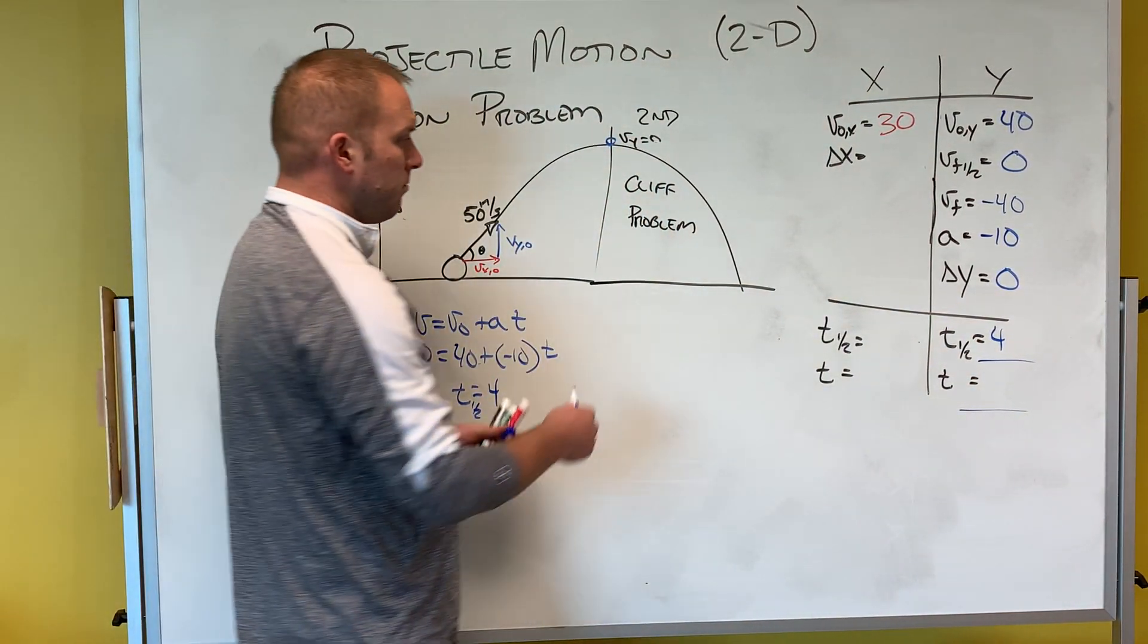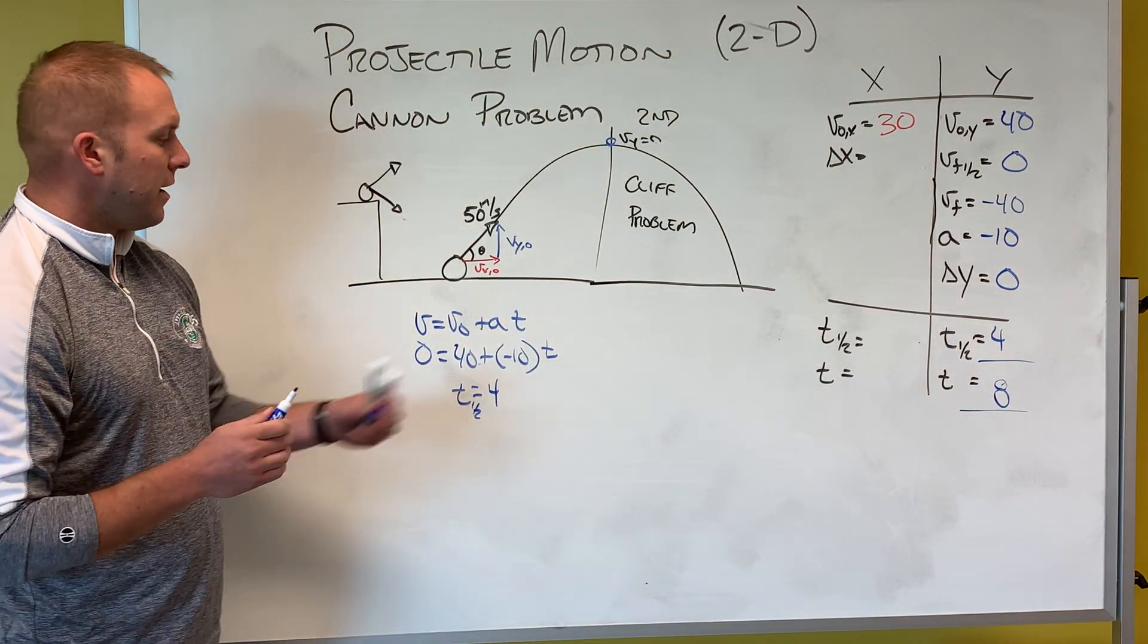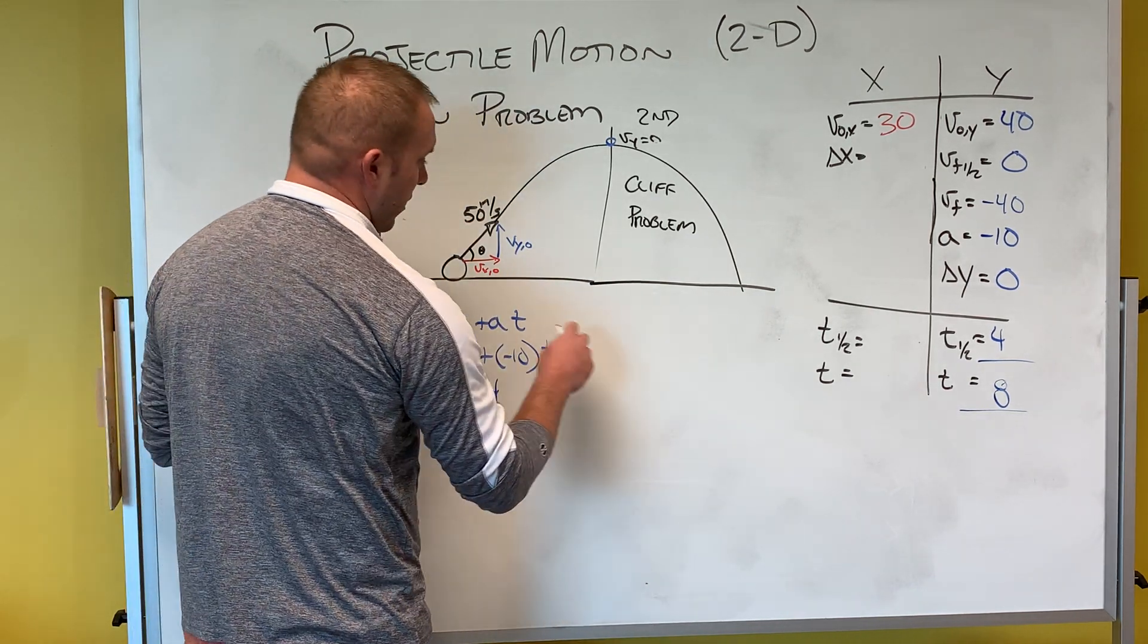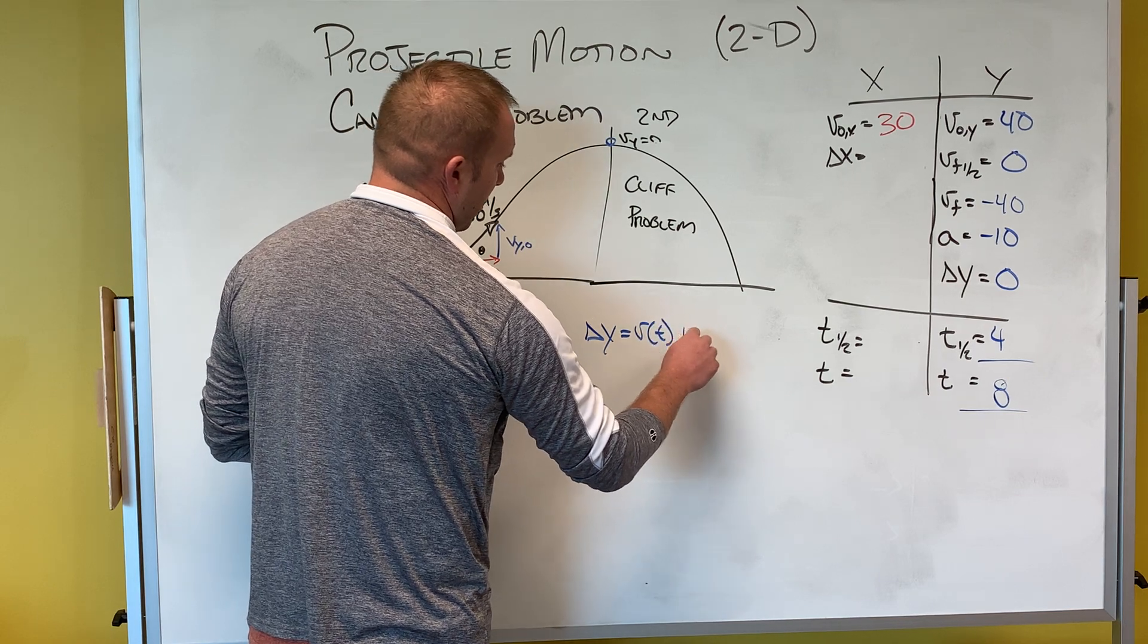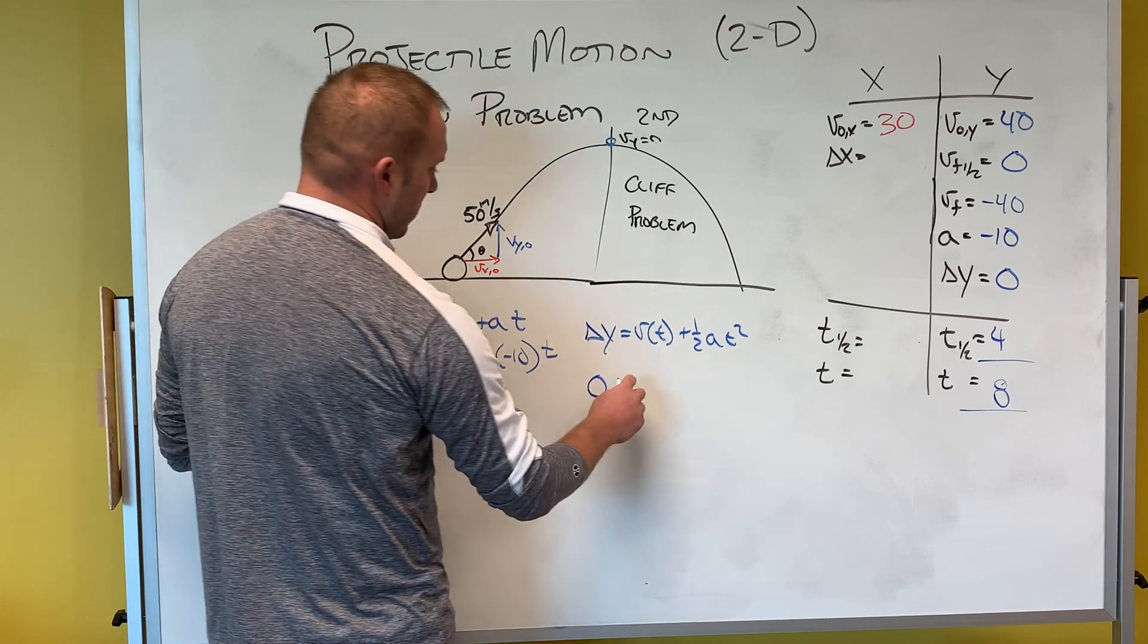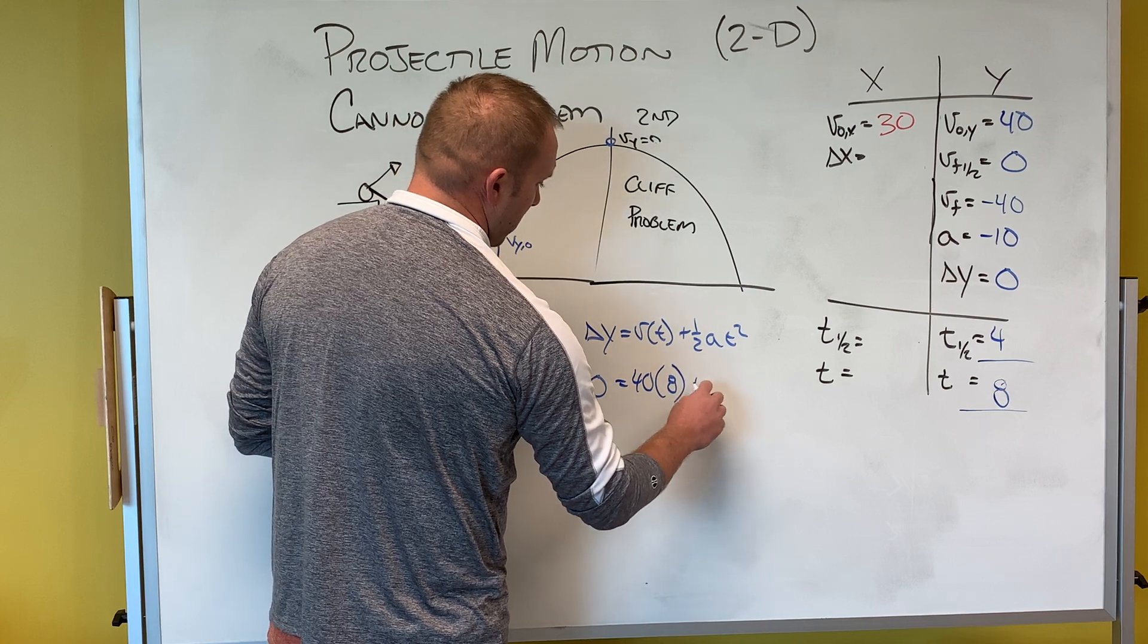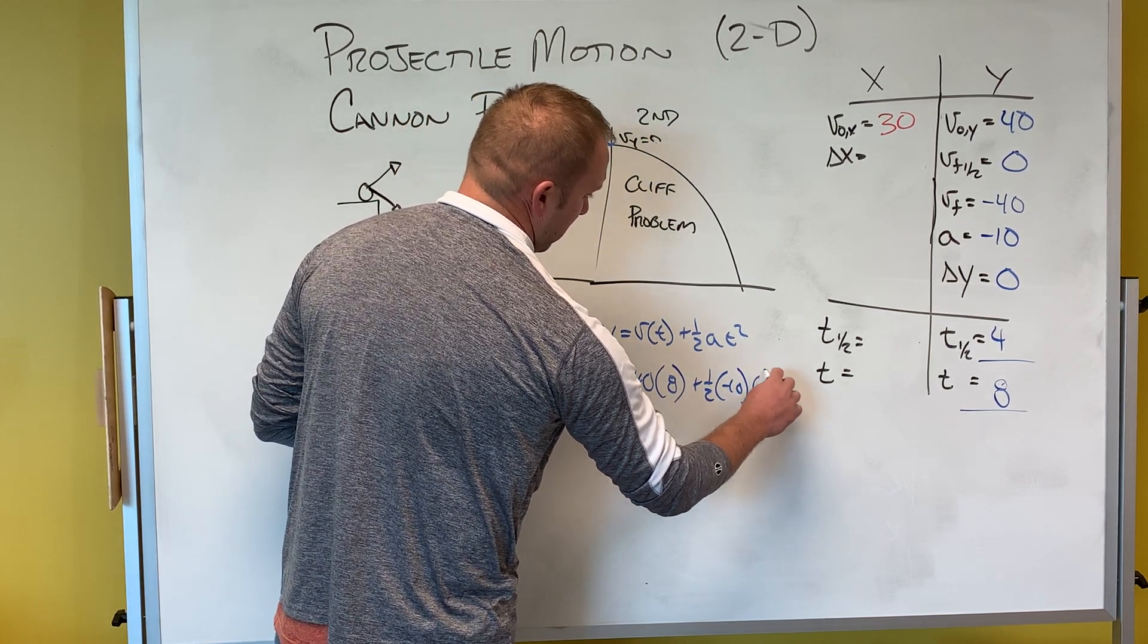What I know then, that my total time would then be eight seconds. And I can prove that using our equation of change in y equals velocity times time plus one half at squared. So my change in y should be zero. This would be 40 times 8 plus one half negative 10 times 8 squared.